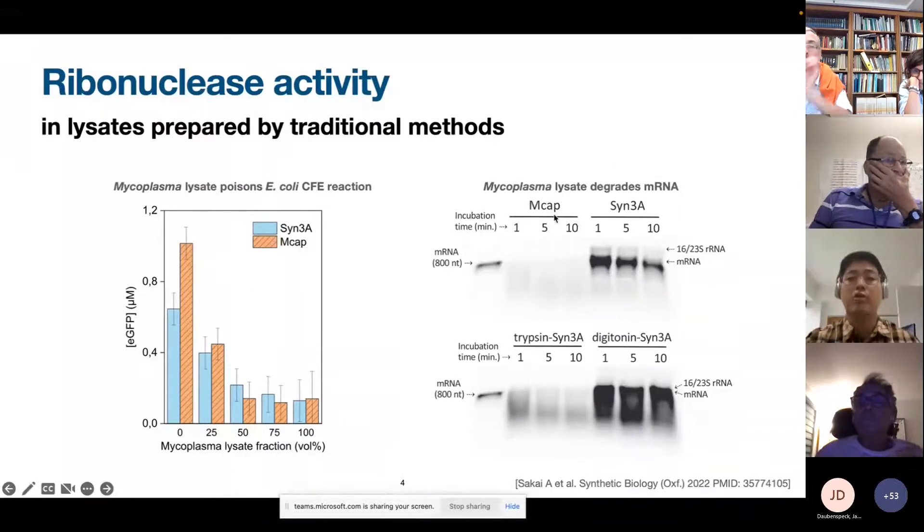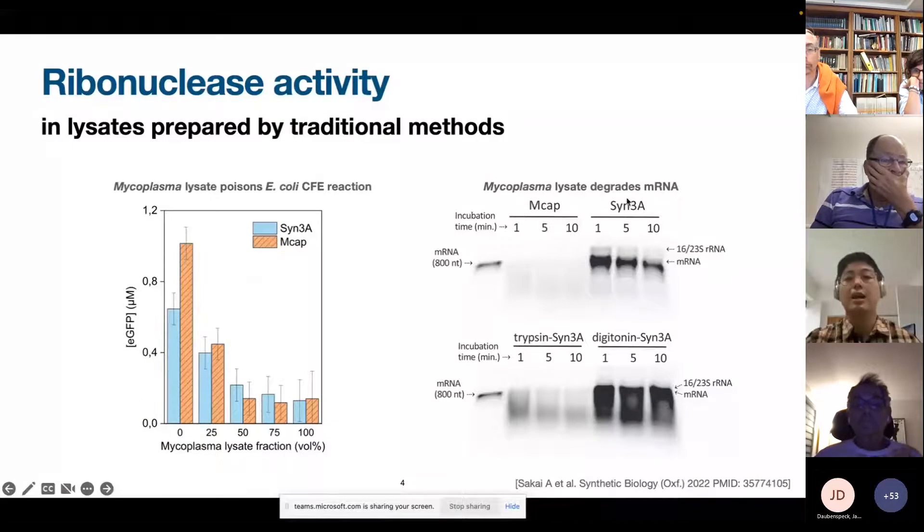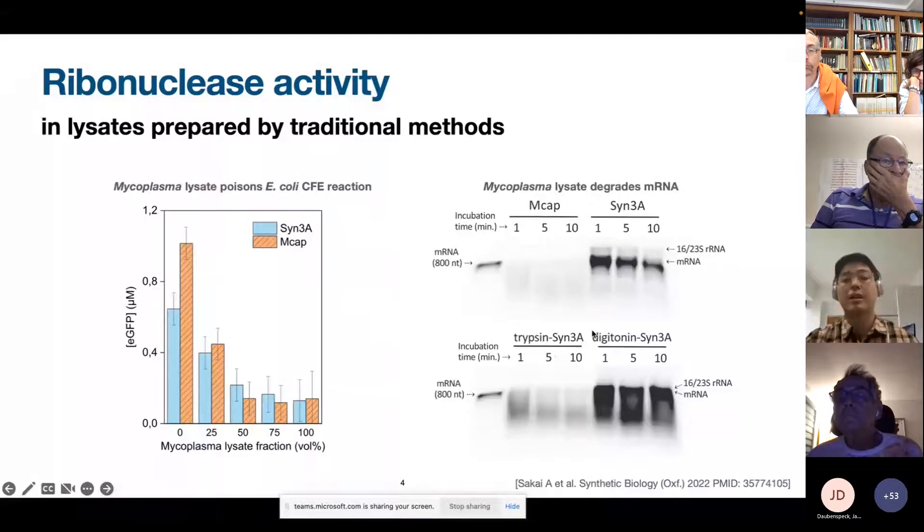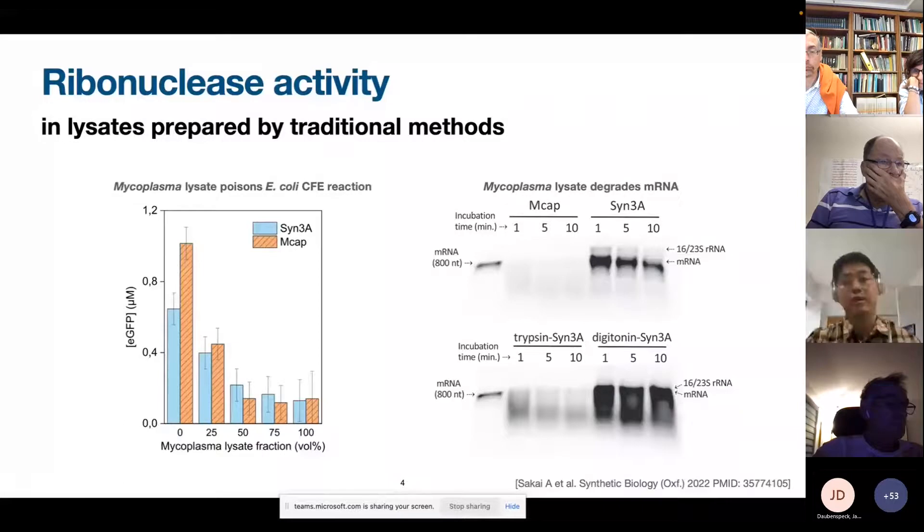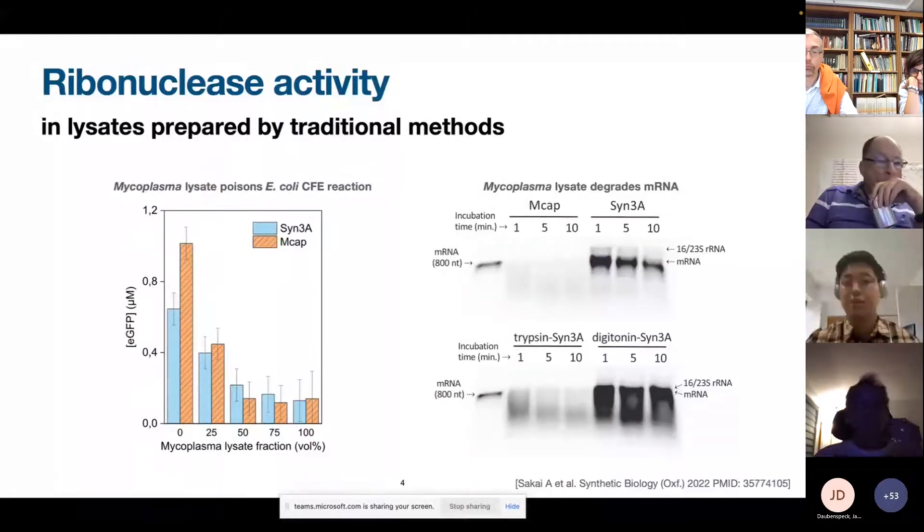And on the right hand side, you can see the degradation of mRNA when it's incubated with mycoplasma lysate. So you can see for mycoplasma capricolum, SYN3A, also for trypsinized SYN3A cell lysate, and also for the digitonin SYN3A. In this case, for digitonin SYN3A, we observed a higher content of ribosomal RNAs and a lower degradation of mRNA. So that was our best lysate preparation at that time, in which we observed the lowest RNase activity among all the lysate preparations.